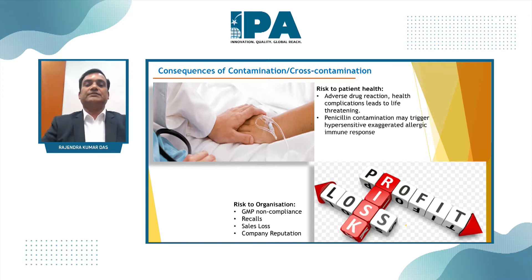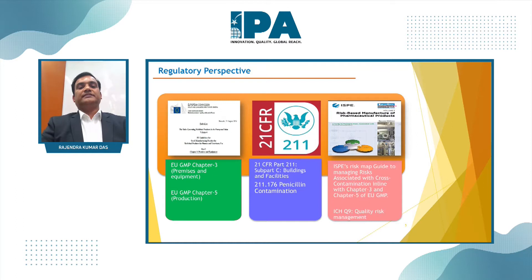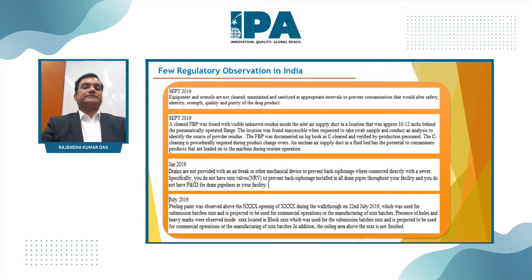The major consequences of contamination include risk to patient health, which is the prime responsibility, as well as risks to the organization such as GMP non-compliances, recalls, sales losses, and company reputation. Regulatory guidance includes EU GMP Chapter 3 and 5, 21 CFR Part 211 on building and facility, 21 CFR 211.176 on penicillin contamination, and ICH Q9 and ISP Volume 7 on contamination management.